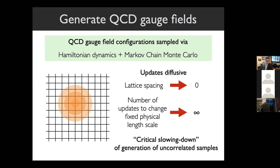A particular challenge is that Hamiltonian Monte Carlo is a close-to-local or diffusive updating approach, which means that as the lattice spacing becomes finer — a limit you need to take to recover QCD — the number of updates needed to change physics on a fixed physical scale diverges. With a coarser lattice spacing it takes fewer updates to decorrelate on a given length scale than with a fine spacing. This divergence is a manifestation of critical slowing down in the generation of uncorrelated samples, which is a particularly severe computational challenge.